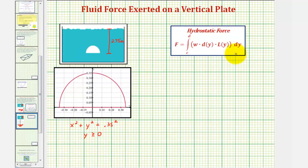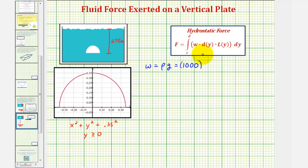Let's begin by determining the weight density, which equals the density of the water times the acceleration due to gravity: 1,000 kilograms per cubic meter times 9.8 meters per second squared, giving a weight density of 9,800 newtons per cubic meter.